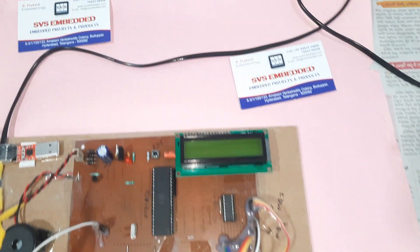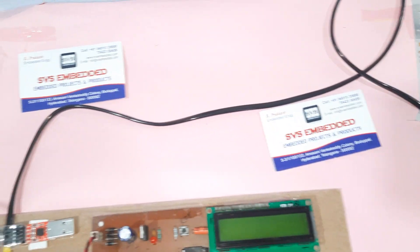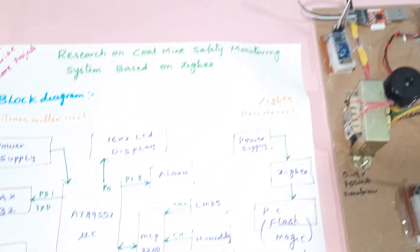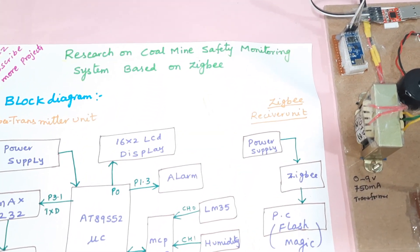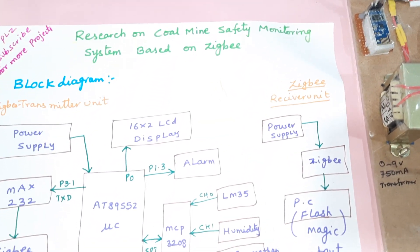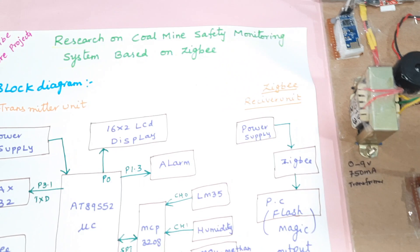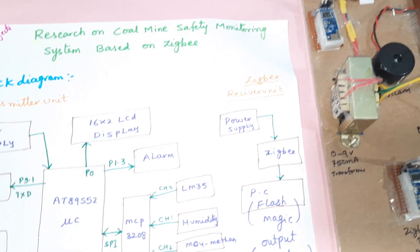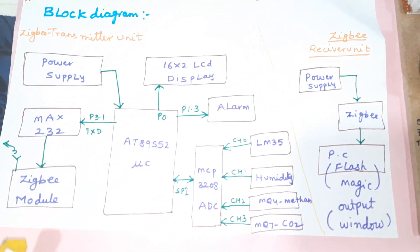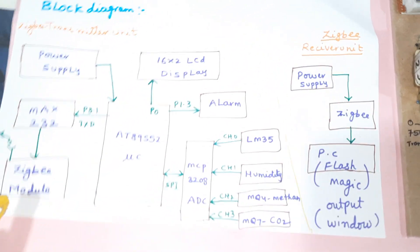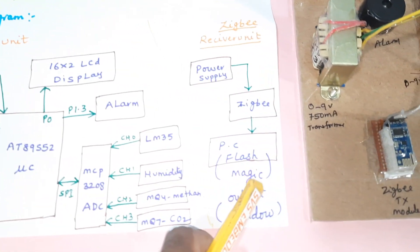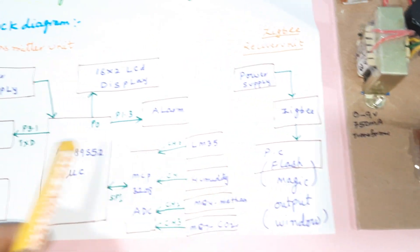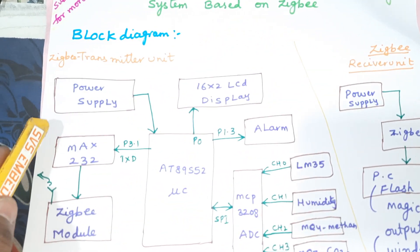Hi, we are from SVS Embedded. The project title is 'Research on Coal Mine Safety Monitoring System Based on ZigBee.' We are using two modules: one is the transmitter module and another is the receiver module.